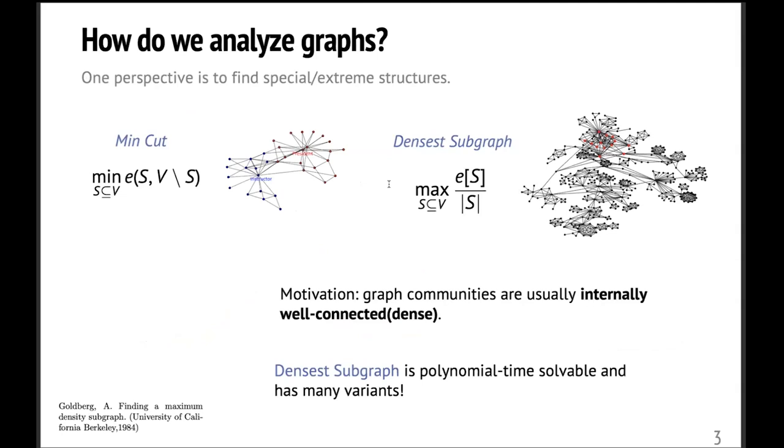And how do people usually analyze these graphs and hypergraphs? One common perspective of graph data analysis is trying to find the extreme or special structures in graphs or hypergraphs. And there are a lot of different examples. Here I list two. The first one is the most classical one, like the minimum cut, where you want to find the smallest set of edges which separates the graph into two components. And here I give one example on the Zachary's Karate Club social network, where I find the smallest set of edges separating the instructor node and the president node.